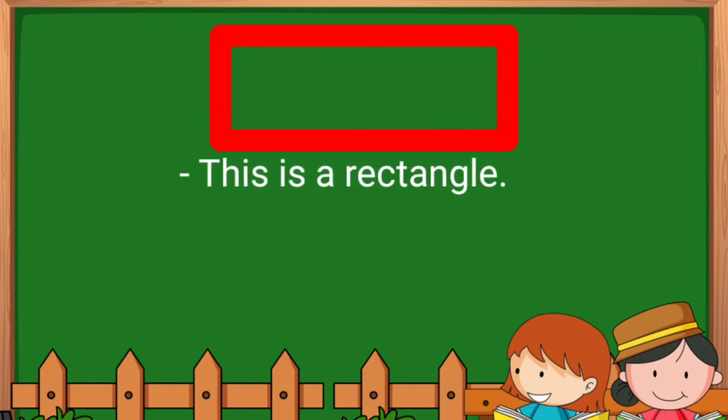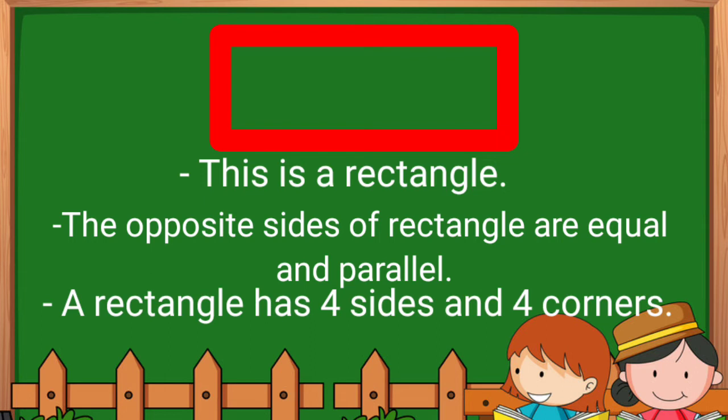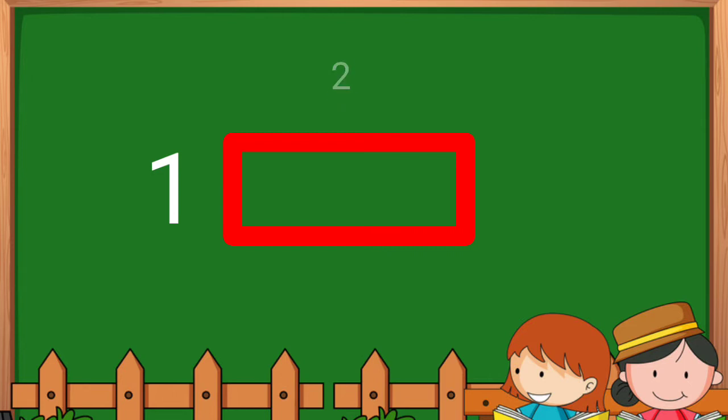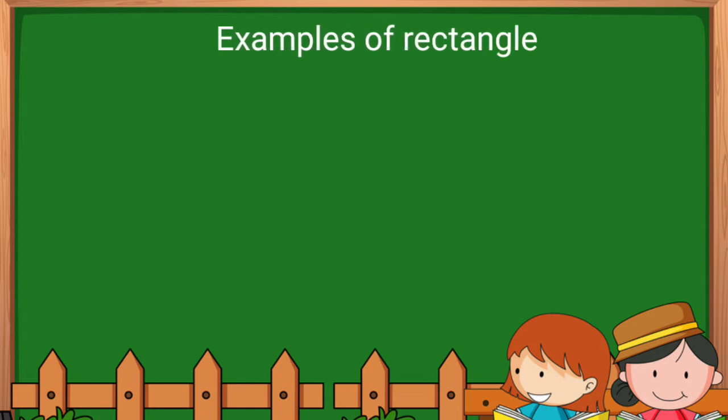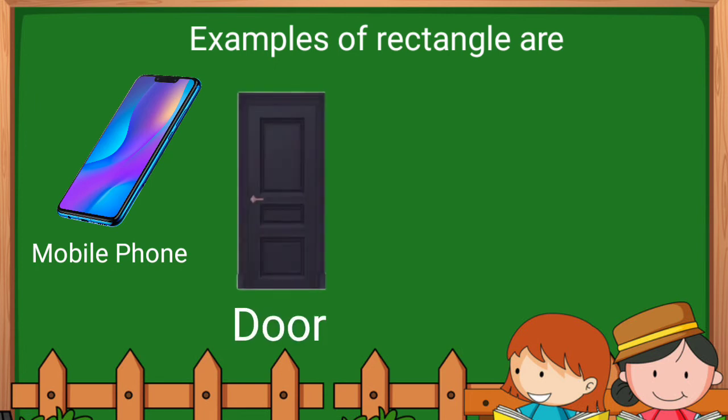This is a rectangle. The opposite sides of a rectangle are equal and parallel. A rectangle has four sides and four corners. Let's count: one, two, three, four - four sides. Examples of rectangle are mobile, hole, door, blackboard, television. These are all examples of rectangle.